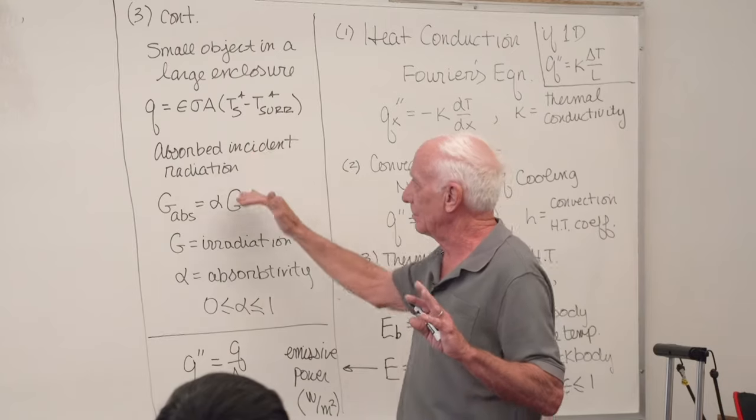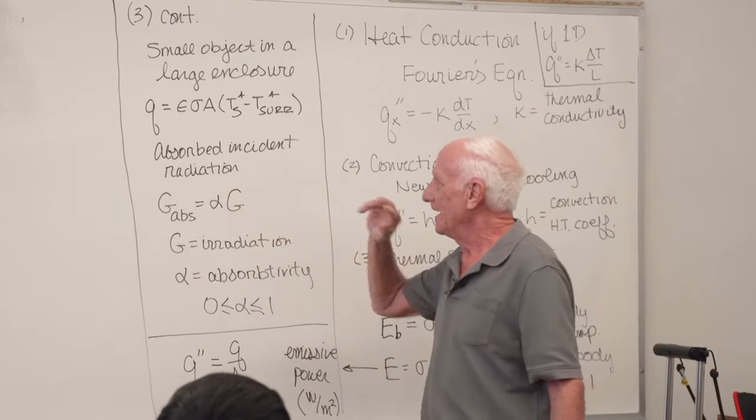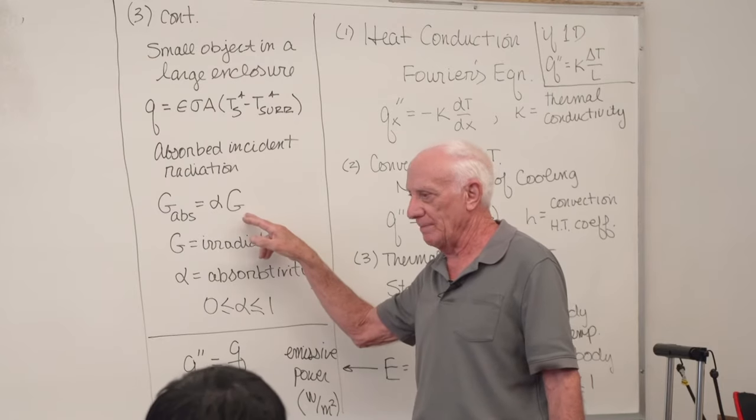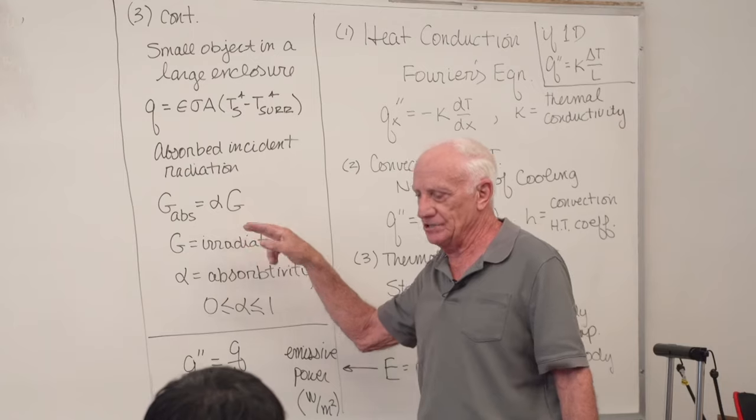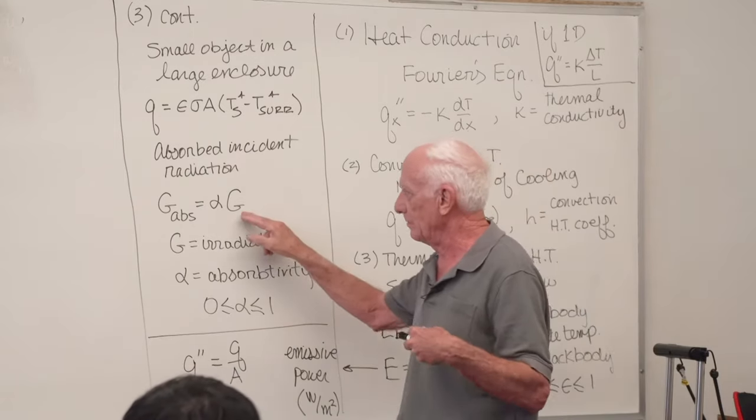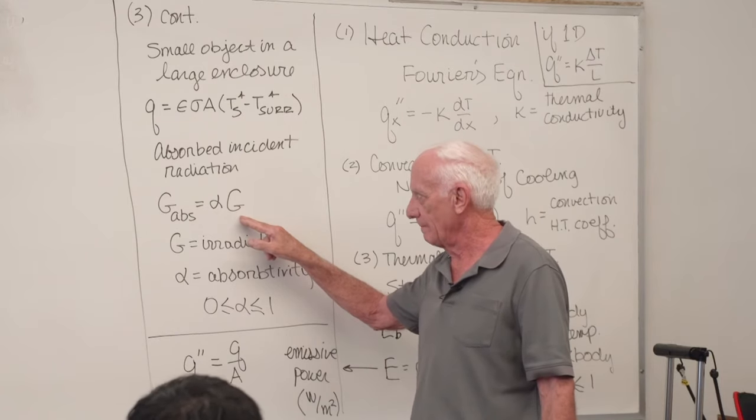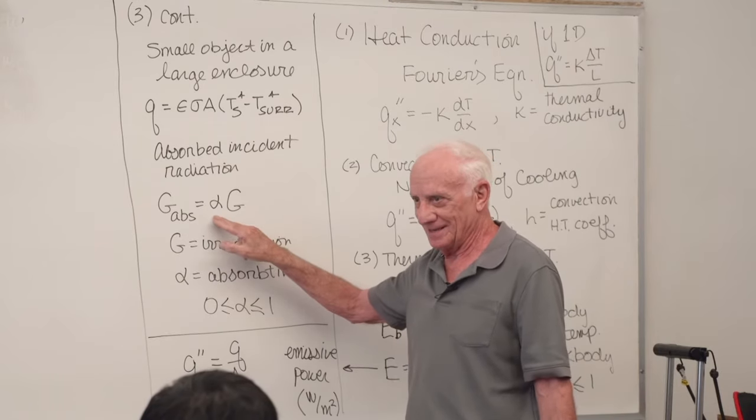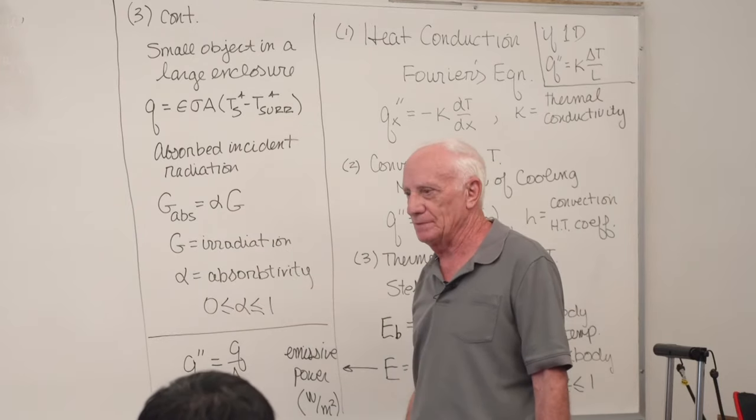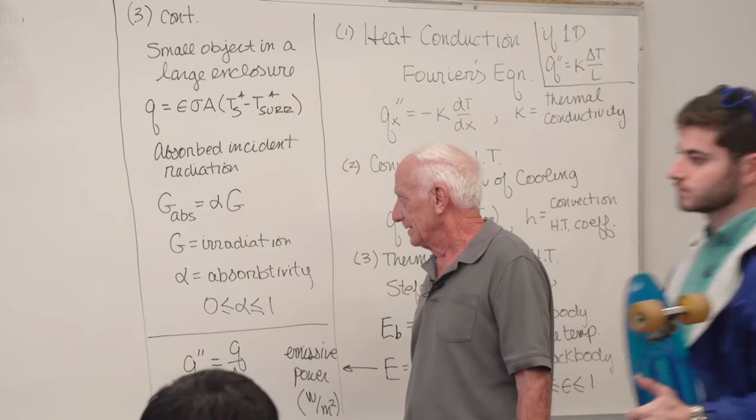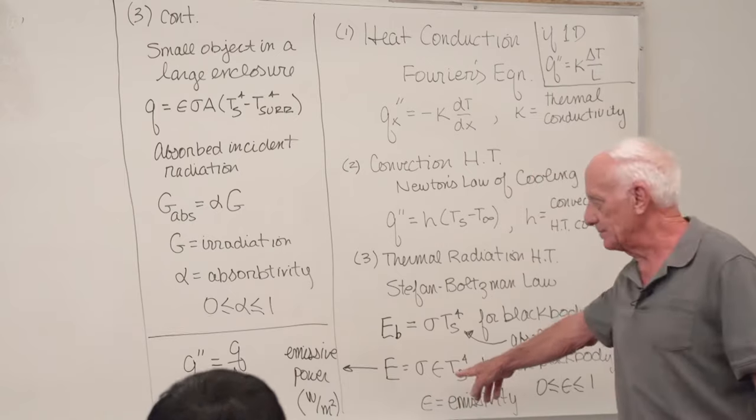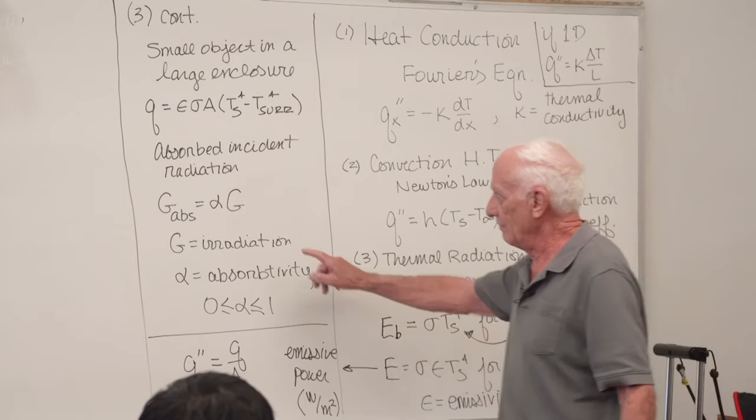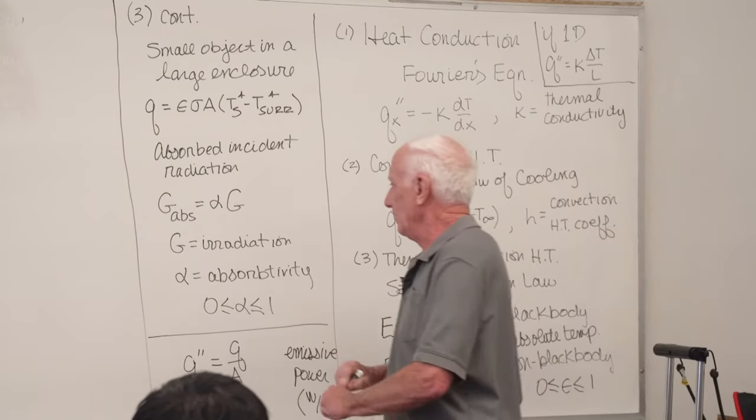We didn't discuss this last time, but I added one more thing. In Chapter 1, we also talk about absorbed incident radiation. The symbol capital G, it's called the irradiation. It's how much energy comes into a surface from its surroundings. This is the amount absorbed, G ABS, absorbed. Alpha is the absorptivity. It varies between zero and one. So now we have two properties, emissivity epsilon and absorptivity alpha. We have one capital letter E called the emissive power. We have one capital G called the irradiation. They're both in watts per square meter.